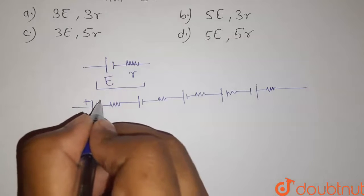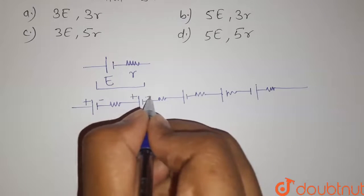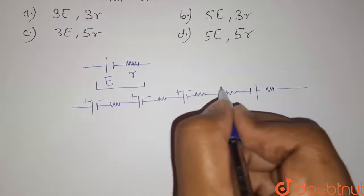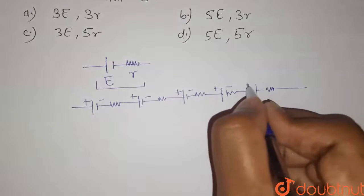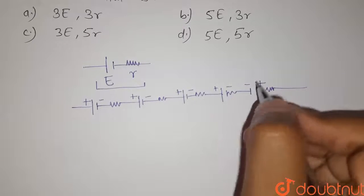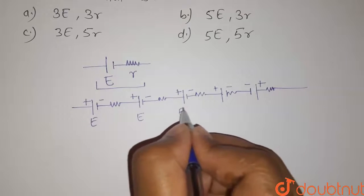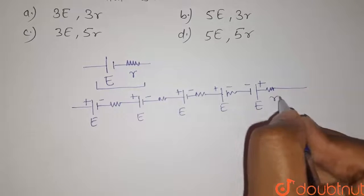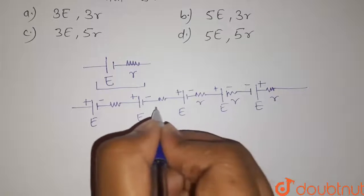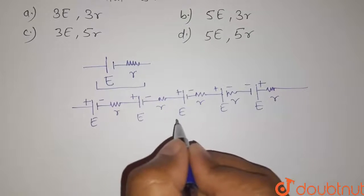This is positive terminal. This is negative. This is positive. This is negative. Positive, negative. Positive, negative. And it is negative and positive. The EMF of each cell is equal to E and the internal resistance of each cell is equal to R. So this is our circuit.